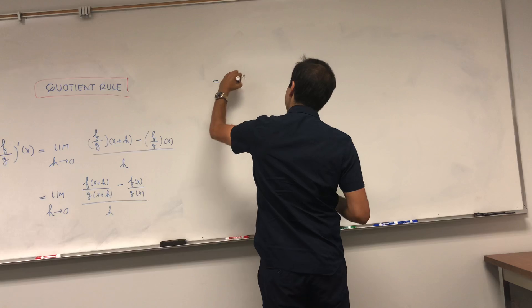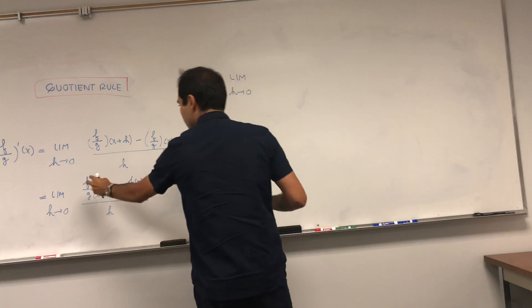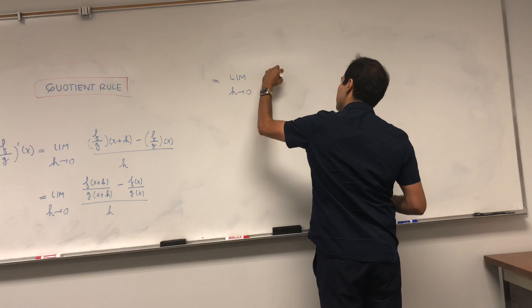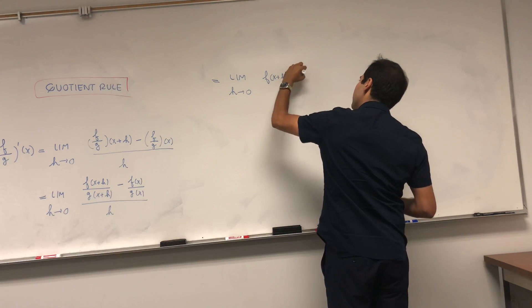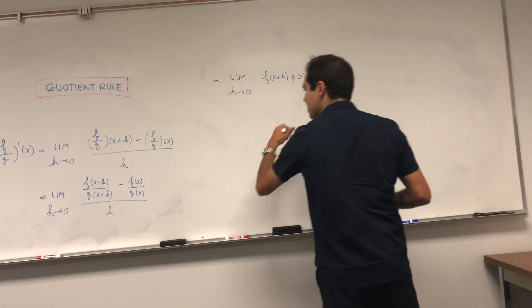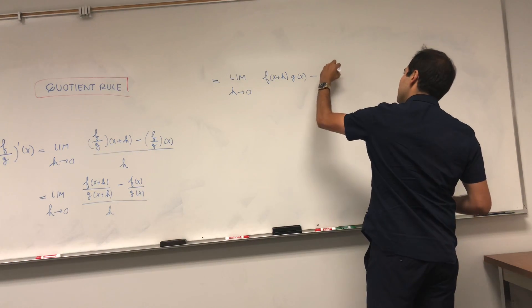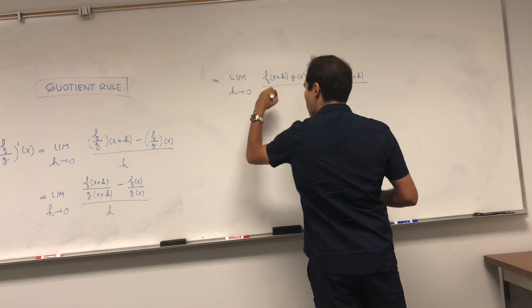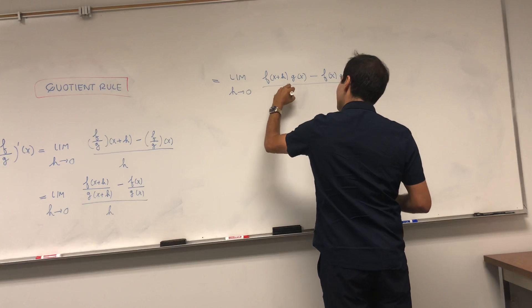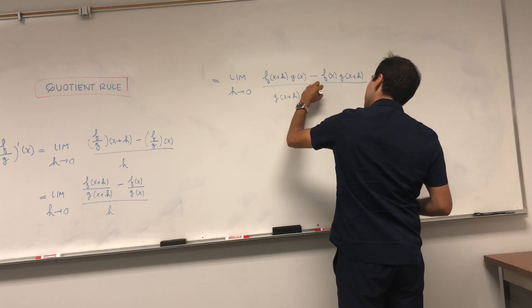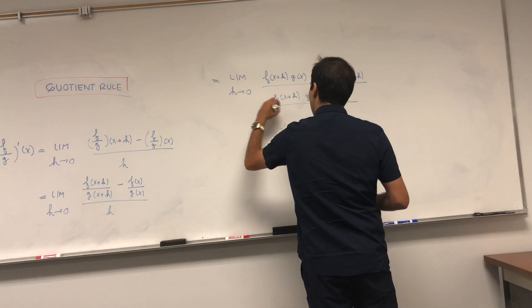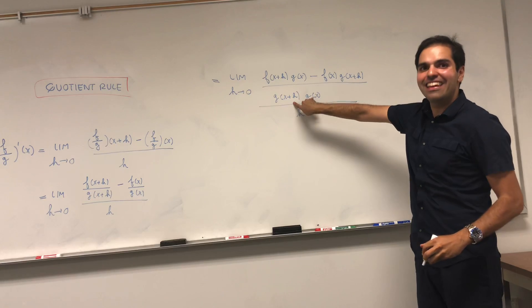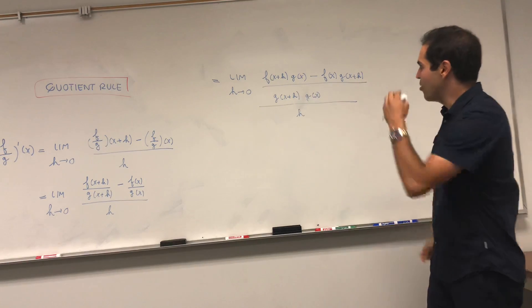So we have limit h goes to zero of f of x plus h times g of x minus f of x times g of x plus h over g of x plus h times g of x. Again, all this over h. And by the way, this is where the g squared at the end will come from, from the quotient rule.